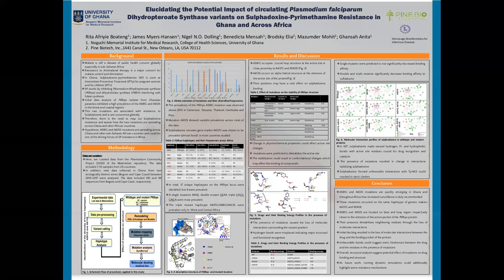From Figure 6, sulfadoxine in the wild type made several hydrogen bonds, hydrophobic interactions, and other important molecular interactions with active site residues crucial for drug recognition and catalysis. However, in the presence of mutations, changes in interactions with the drug occurred, and unfavorable interactions with tyrosine 616 were formed, which could result in steric clashes with the drug.